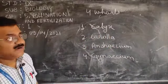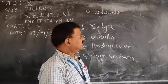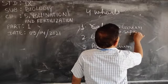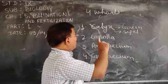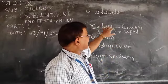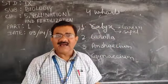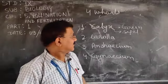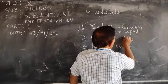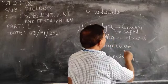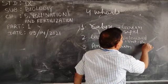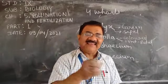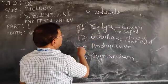Calyx is the outermost whorl, green in color. One unit is called a sepal, and the whole whorl is called calyx. It does the work of photosynthesis and protects the flower in the bud stage. Next, corolla is the colored part; one unit is called a petal. Its function is to attract insects for pollination and protect the inner parts.